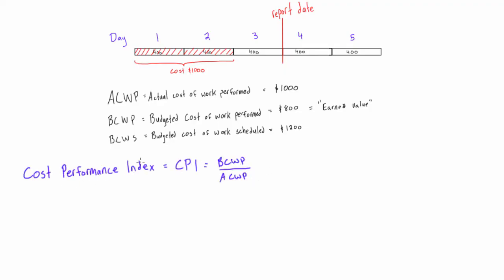So first of all, cost performance index—it's a ratio of the budgeted cost to the actual cost. If we get the CPI is greater than one, we'll know that the project is under budget and that's a good thing. And if we get the CPI is less than one, this tells us that the project is over budget and that's a bad thing.